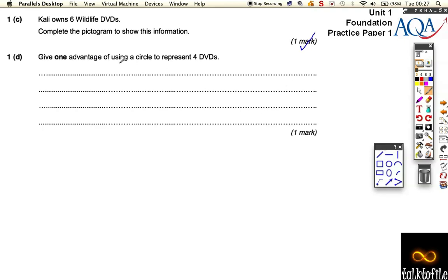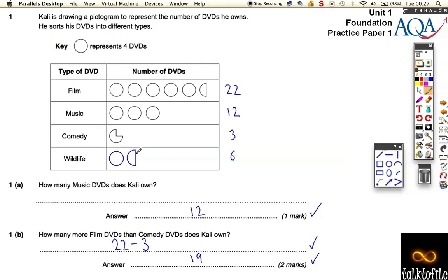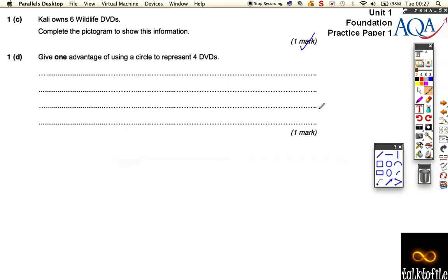And the last one says give one advantage of using a circle to represent four DVDs. Well, let's kind of really mention that. Well, if we want to represent two, that's easy because there's a half, or even if we want to represent one or three, that's also easy. So what I wrote down for this was it is easy to draw one, two, three, or four DVDs with one circle. So it doesn't have to be too detailed, it's only worth one mark, and it's the first question on the paper. So something along those lines is saying it's easy to represent one, two, three, or four DVDs. Something along those lines gets your mark.